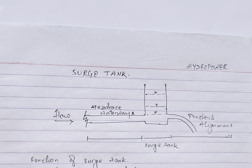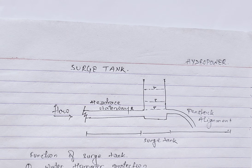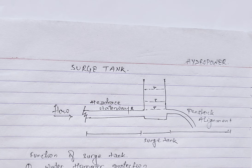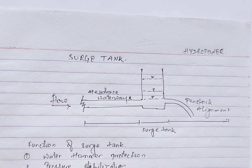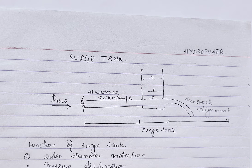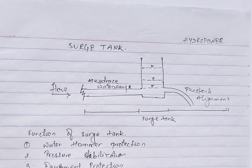Now let's talk about the functions of the source tank. Source tanks have several important functions in fluid systems, particularly in hydropower plants, water supply, and pipeline systems. The first function is water hammer protection: the source tank absorbs sudden pressure changes in the fluid system, preventing water hammer and safeguarding pipes and equipment.